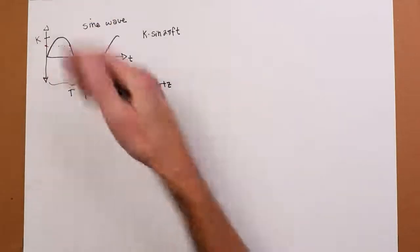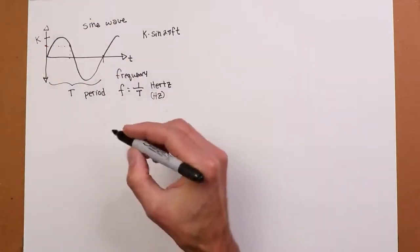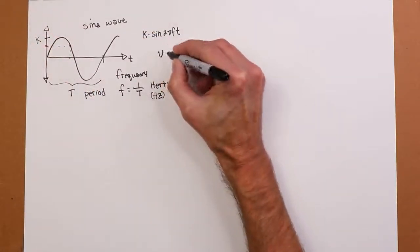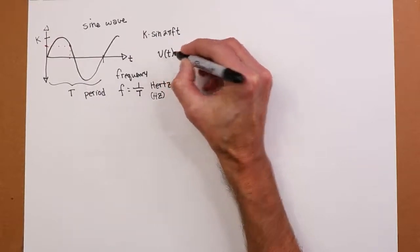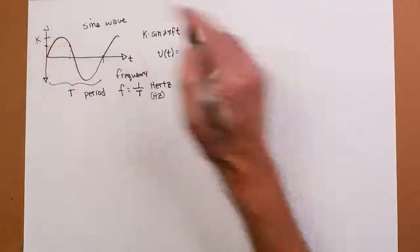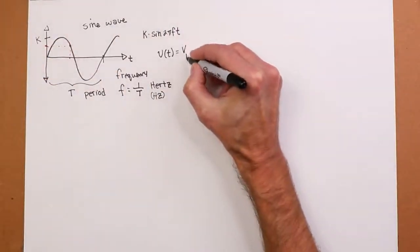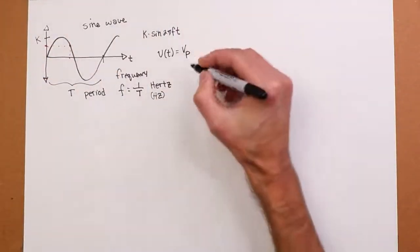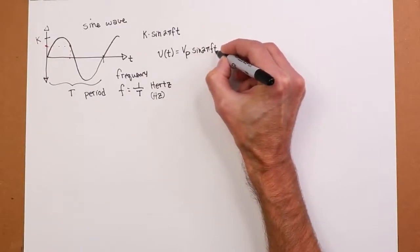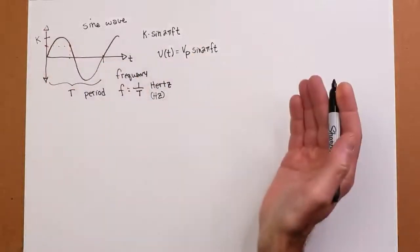If this was a voltage we were talking about, we would talk about the voltage as a function of time, V of t, and that would equal the peak value, which we would call VP, the peak value, times the sine of 2 pi f t. So that's just our basic wave.